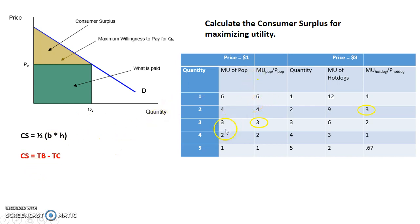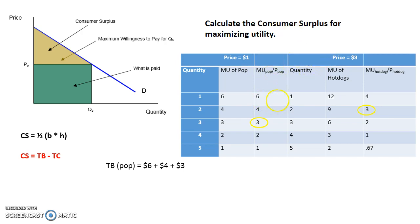This chart is already giving you the marginals, so you didn't have to go from total to marginal. Remember, to find total utility from marginal, you add up the marginals for all units up to that quantity. They're consuming 3 pops, so the total utility of consuming three units of pop is 6 plus 4 plus 3, giving a total benefit of 13.